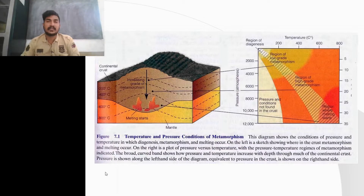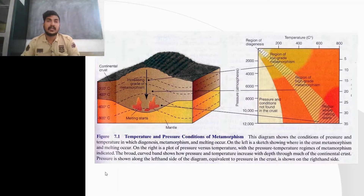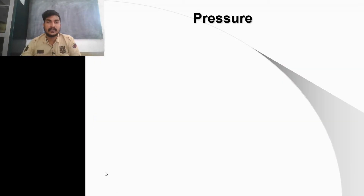At shallower depths where temperature is around 100°C, the type of metamorphism will be low grade. At intermediate depths where temperature reaches around 500°C, it will be medium-grade metamorphism. At greater depths we get high-temperature or high-grade metamorphism. The next factor is pressure.